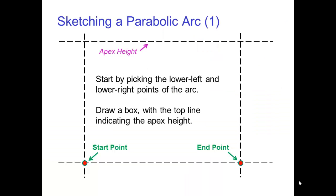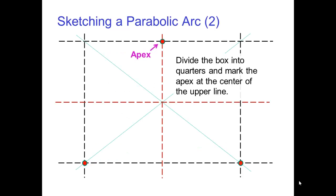So let's see how to sketch a parabolic arc in profile. We'll start by picking the lower left and lower right points of the arc. In a jump, these would be the takeoff and landing. You then draw a box with the top line indicating the apex height. By drawing diagonals, we can easily divide the box into quarters and mark the apex at the center of the upper line.